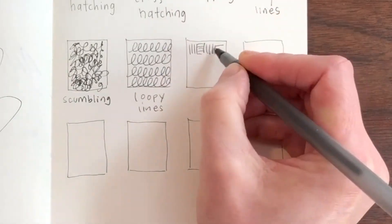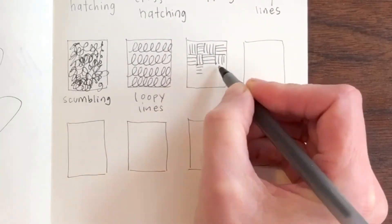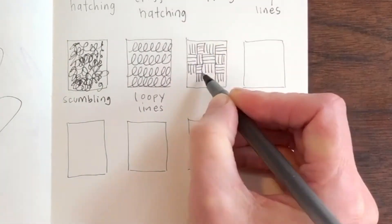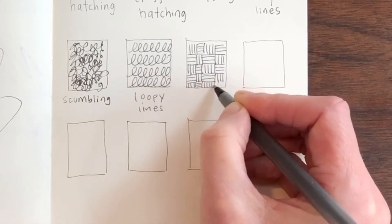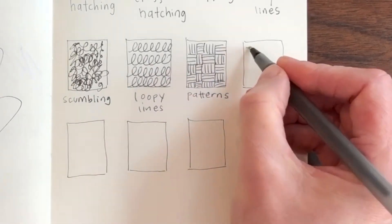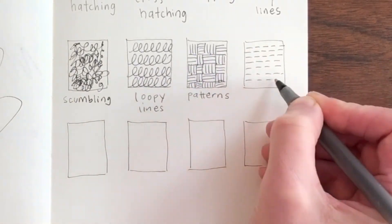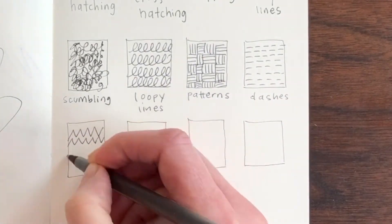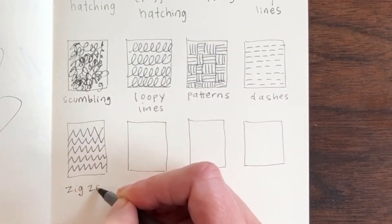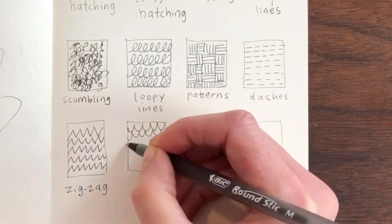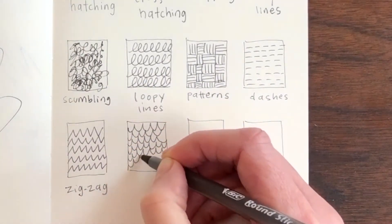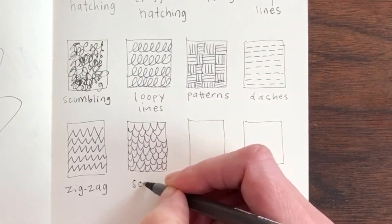Here I'm making alternating vertical and horizontal hatching marks. It looks sort of like a basket but there are many different ways you can make a pattern. These marks are called dashes and these marks are zigzags. This type of mark could be great for fish or flower petals. This mark is called scales.